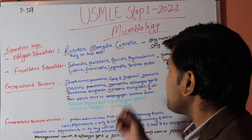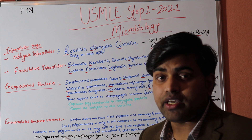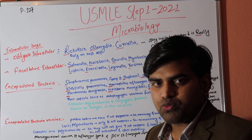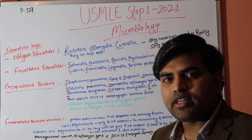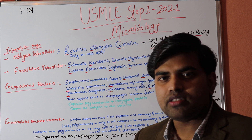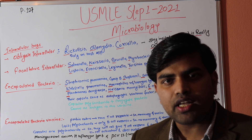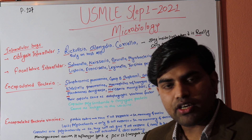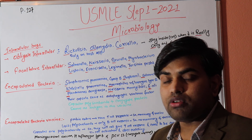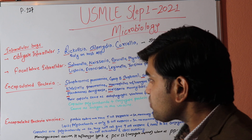Rickettsia and Chlamydia — and Coxiella as well — are the obligate intracellular bacteria. Now, coming to facultative intracellular organisms: 'facultative' means optional. These organisms can be inside or outside the cell. During pathogenesis they can enter the cell, but they can also be found outside, so they have the option — they can live both inside and outside.